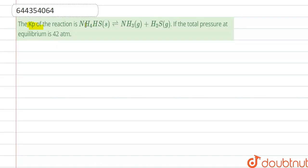The Kp of the reaction NH4HS when it dissociates into NH3 and H2S. If the total pressure at equilibrium is 42 atm given, so we have